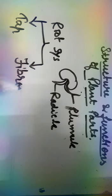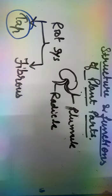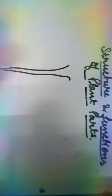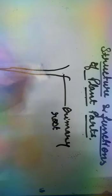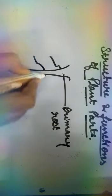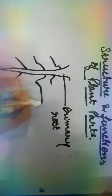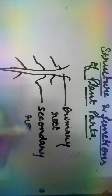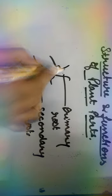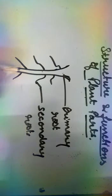Now we are going to talk about the tap root system. In the tap root system, the radicle plays the role of the main root. The radicle grows and forms the main root, which we call the primary root. From the primary root, we get secondary roots.